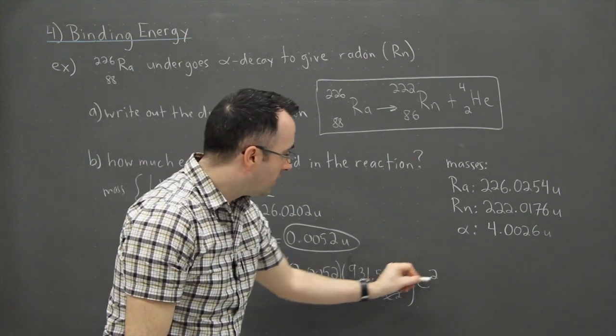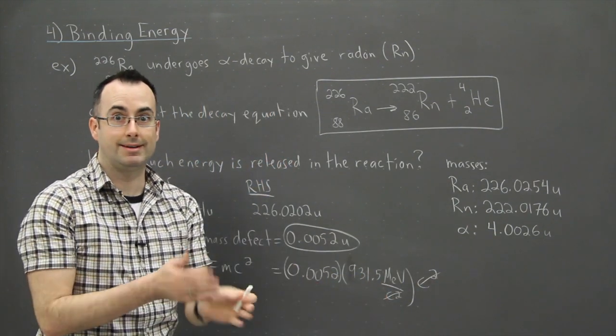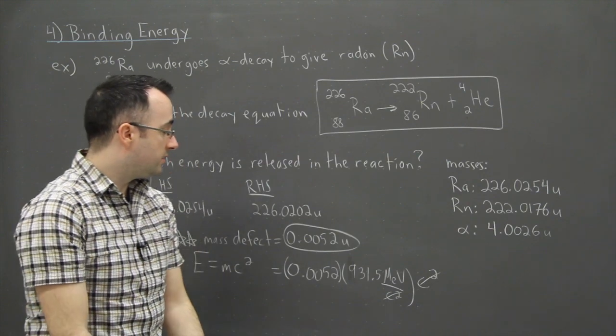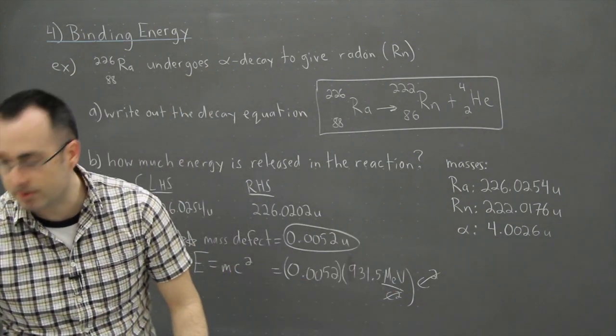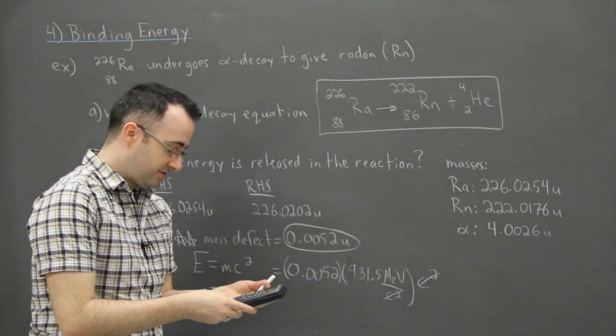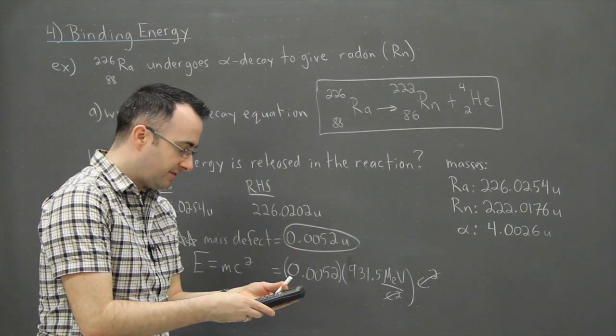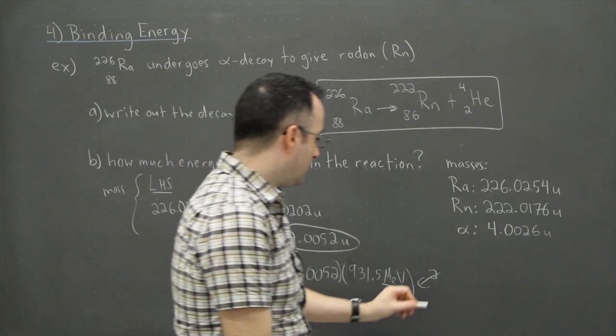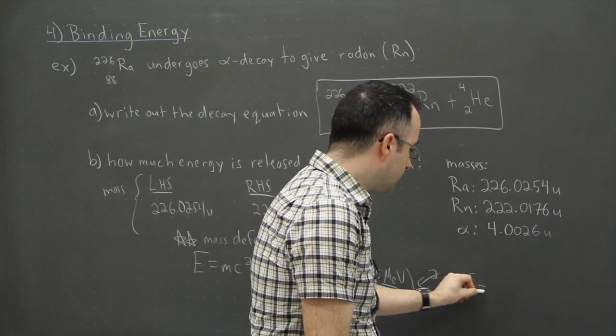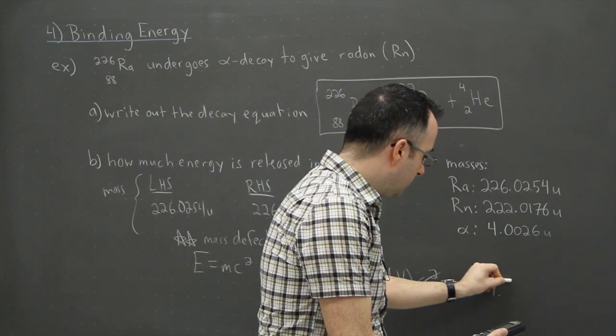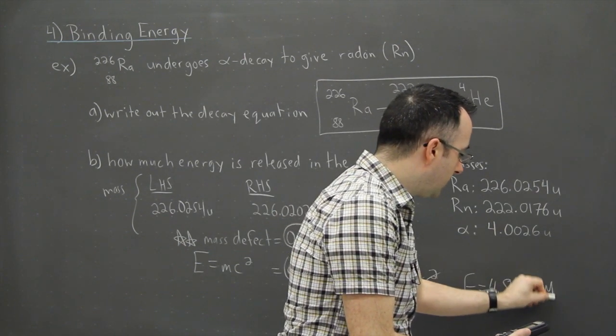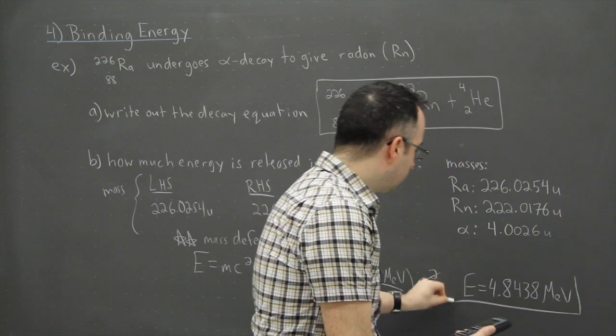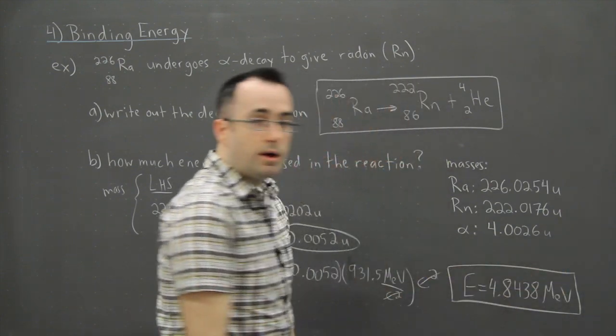This is awesome, because look, these C squared cancels out that C squared, ta-da. And then what we can do is we've already got our things in MeV, so I just have to multiply these two numbers together. 0.0052 times 931.5, and I'm done. That's it. So then I have finally that the energy is going to be 4.8438 mega electron volts.